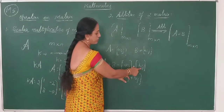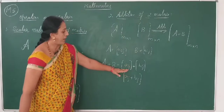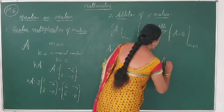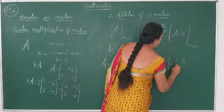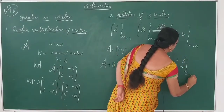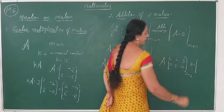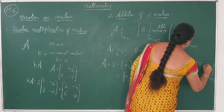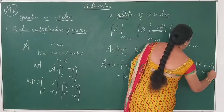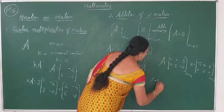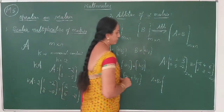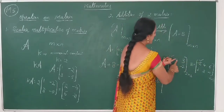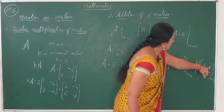Aij and Bij are corresponding elements of matrix A and matrix B. I and J represent the row and column. The corresponding elements in the same row and column are added together. For example, A = [1, 2, 3; 0, 5, −2] is a matrix of order 2×3. B is another matrix of the same order with elements −5, 4, 6, 2, 3, −1.